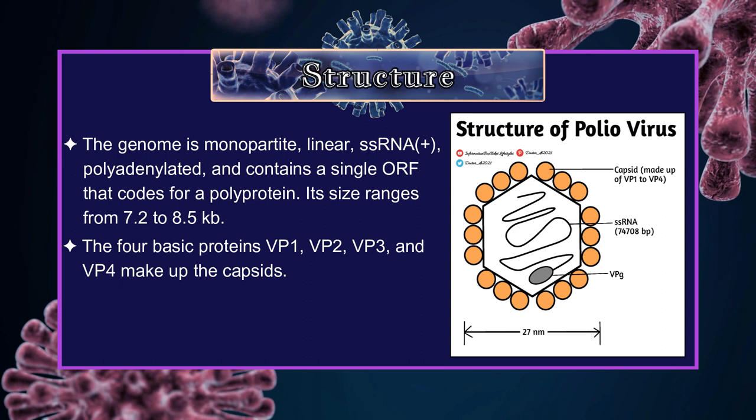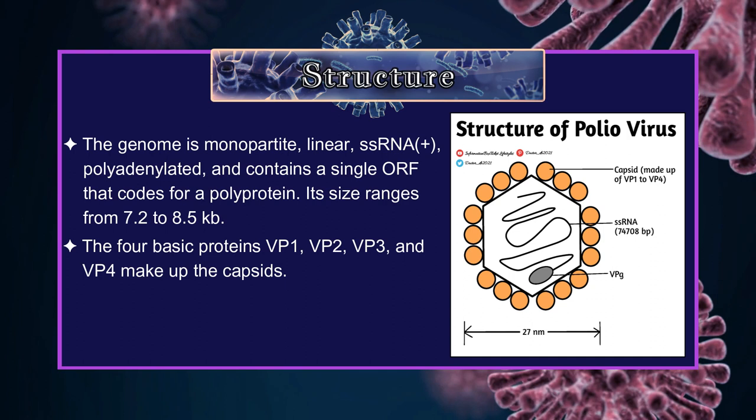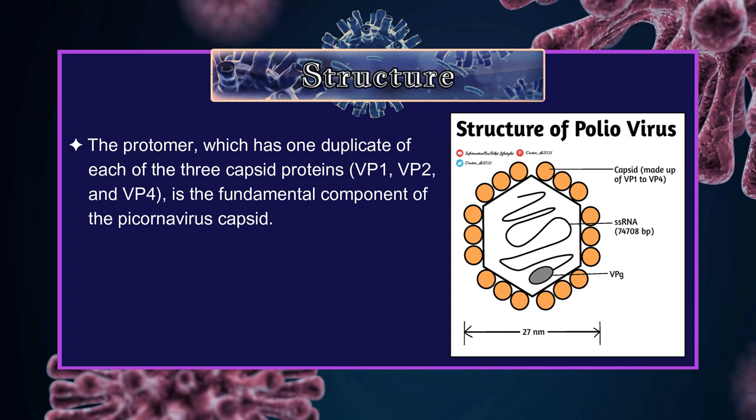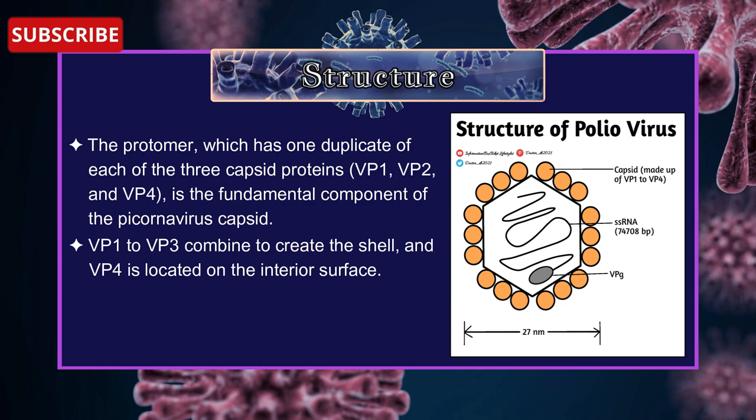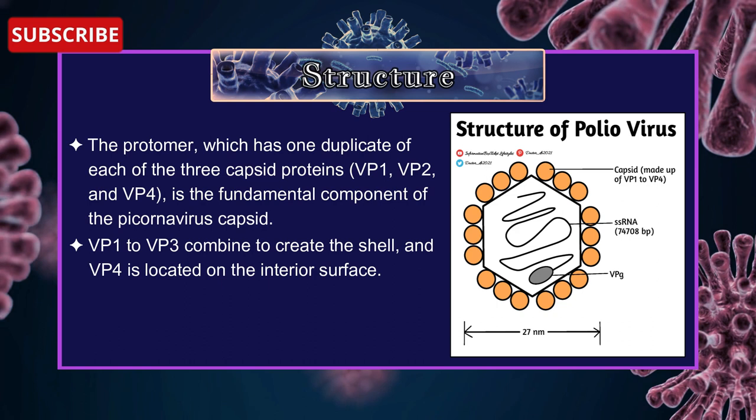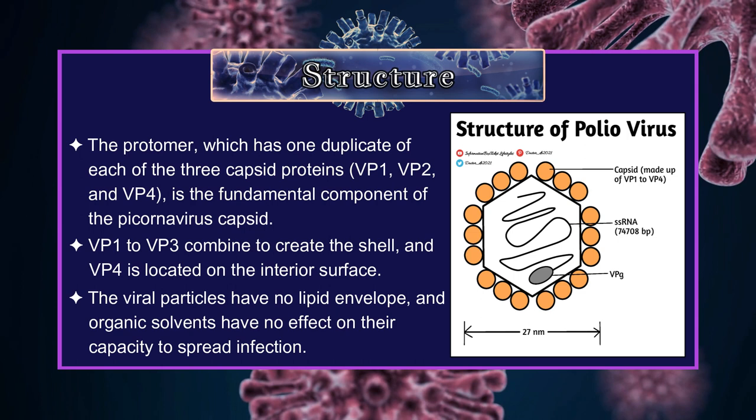The four basic proteins VP1, VP2, VP3 and VP4 make up the capsid. The protomer, which has one copy of each of the three capsid proteins VP1, VP2 and VP4, is the fundamental component of the picornavirus capsid. VP1 and VP3 combine to create the shell and VP4 is located on the interior surface. The viral particles have no lipid envelope and organic solvents have no effect on the capacity to spread infection.